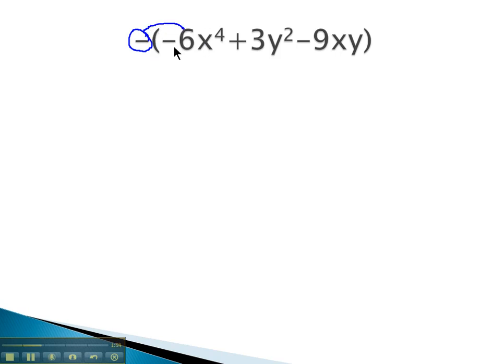The opposite of negative 6x⁴ is positive 6x⁴. The opposite of plus 3y² is minus 3y². Don't lose the squared. And the opposite of minus 9xy is plus 9xy.